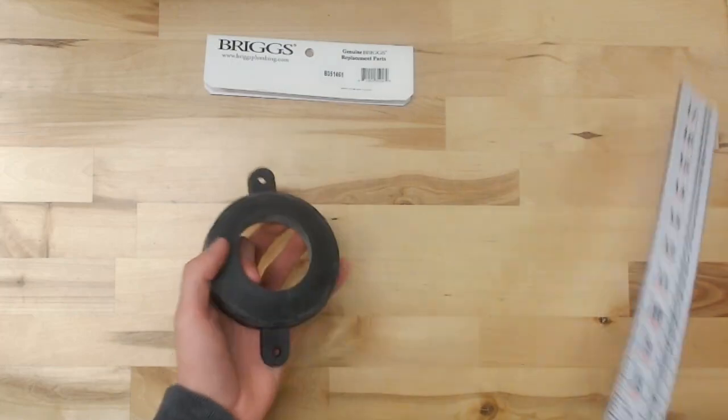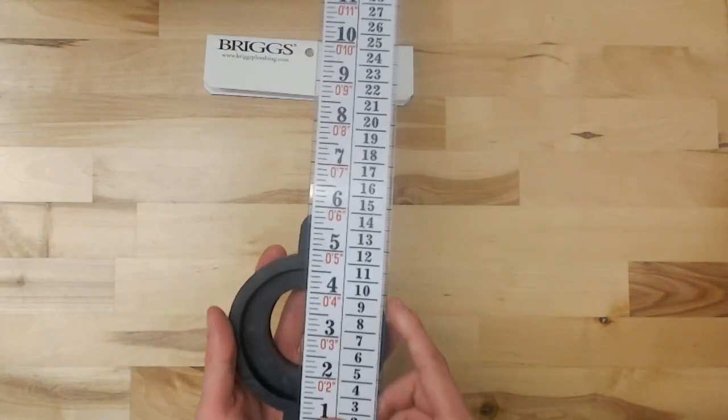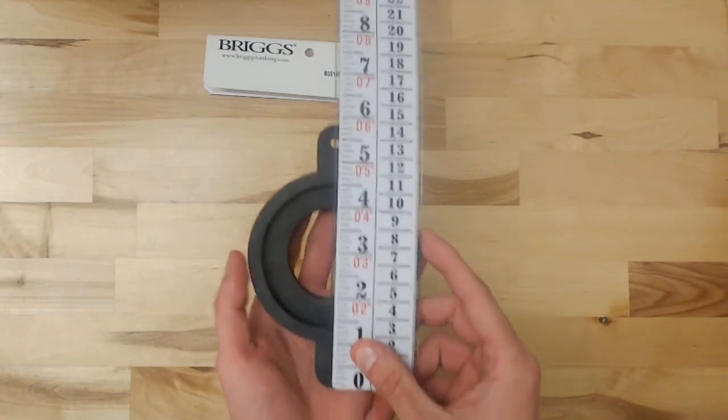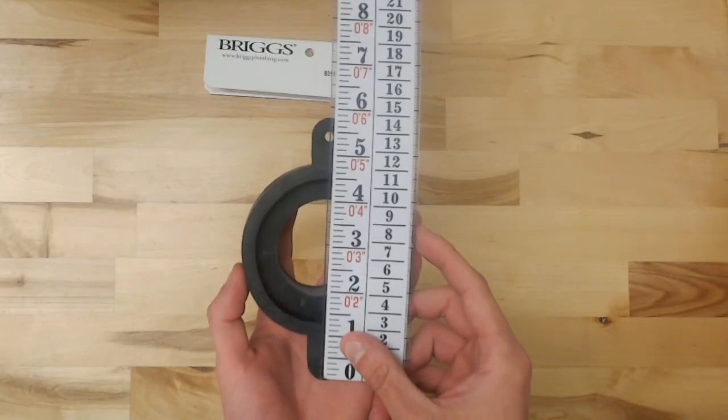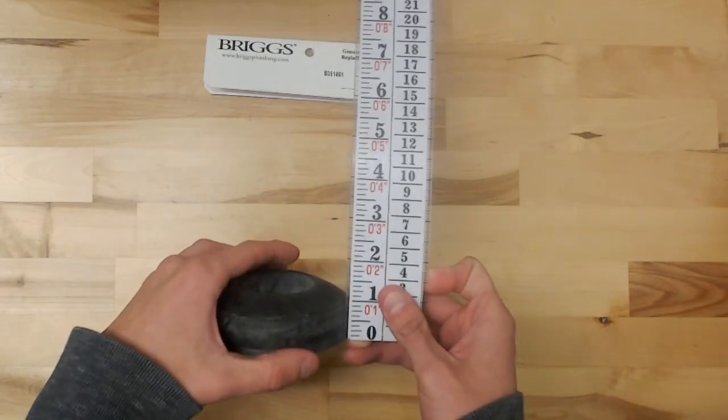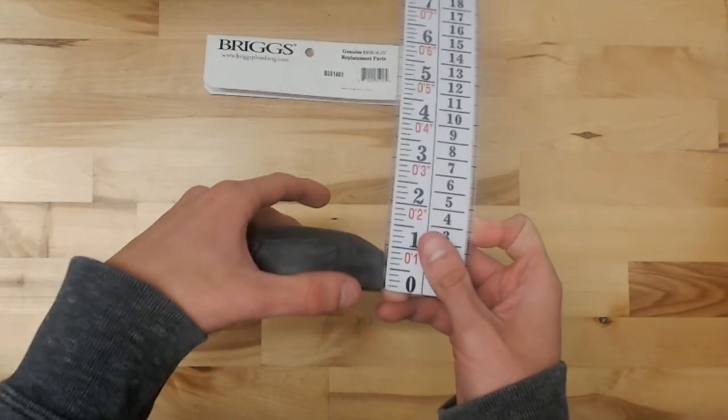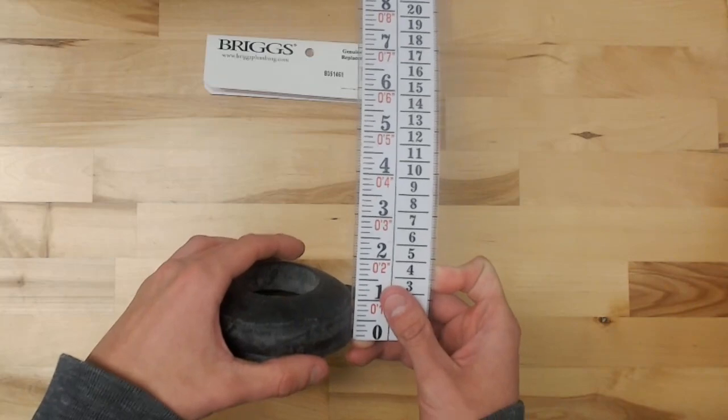We'll get a few measurements here. We'll go all the way across once. It's about one and a quarter inches thick, a little less than one and a half.